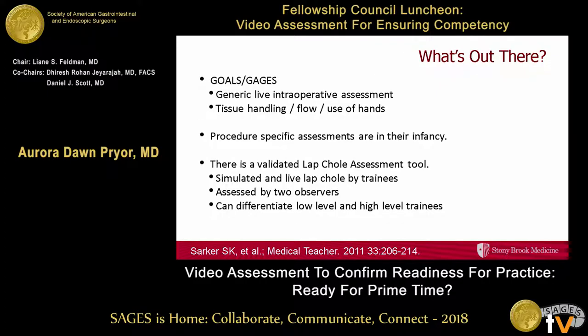So what kind of things do we use for assessment now? As anybody in a fellowship council program knows, we use goals and gauges — you guys are actually evaluating your fellows with these now, or at least you should be. Generic live intraoperative assessment looks at tissue handling, flow, use of hands — those are good basic things, probably good for trainees starting. But if you're really looking for procedural competence, you need to go beyond that and really focus on the critical steps of that procedure.